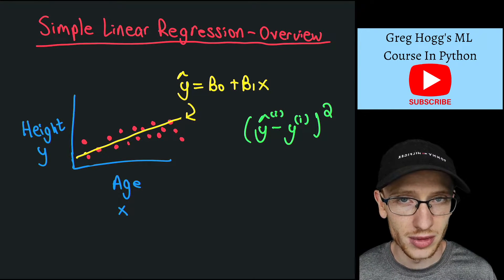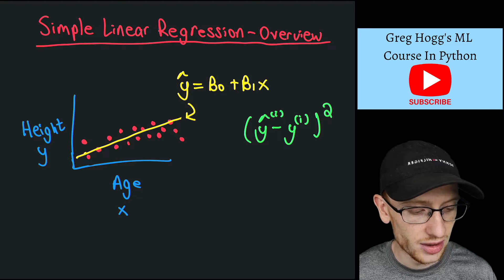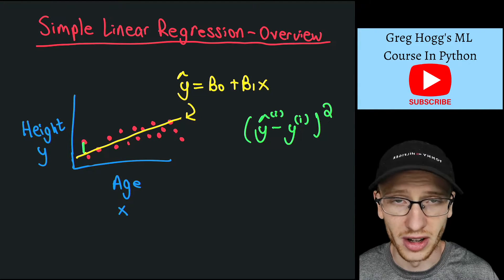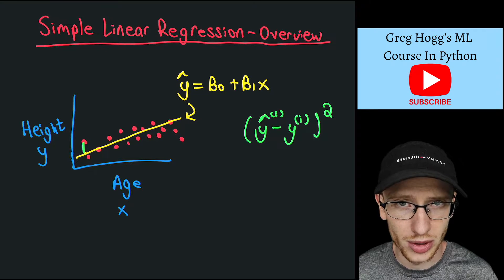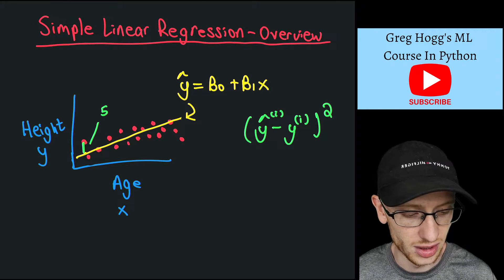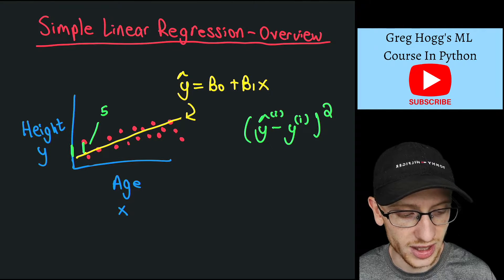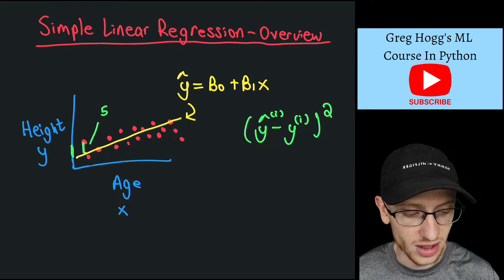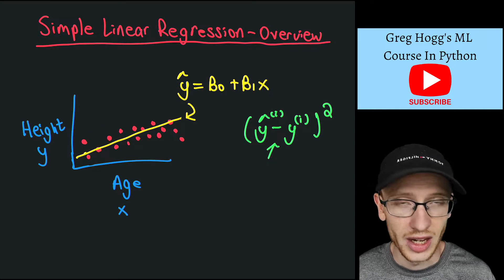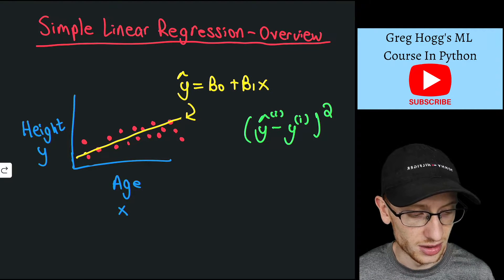So now no matter what, this thing is going to be positive, and we can quantify for every single data point, we can look at the line, the distance between the line and the point. This is some number, say this was five or whatever, so we're talking about the units on the y-axis here. Whatever the distance is here, that distance is this thing here, and then we square that so that it's positive.